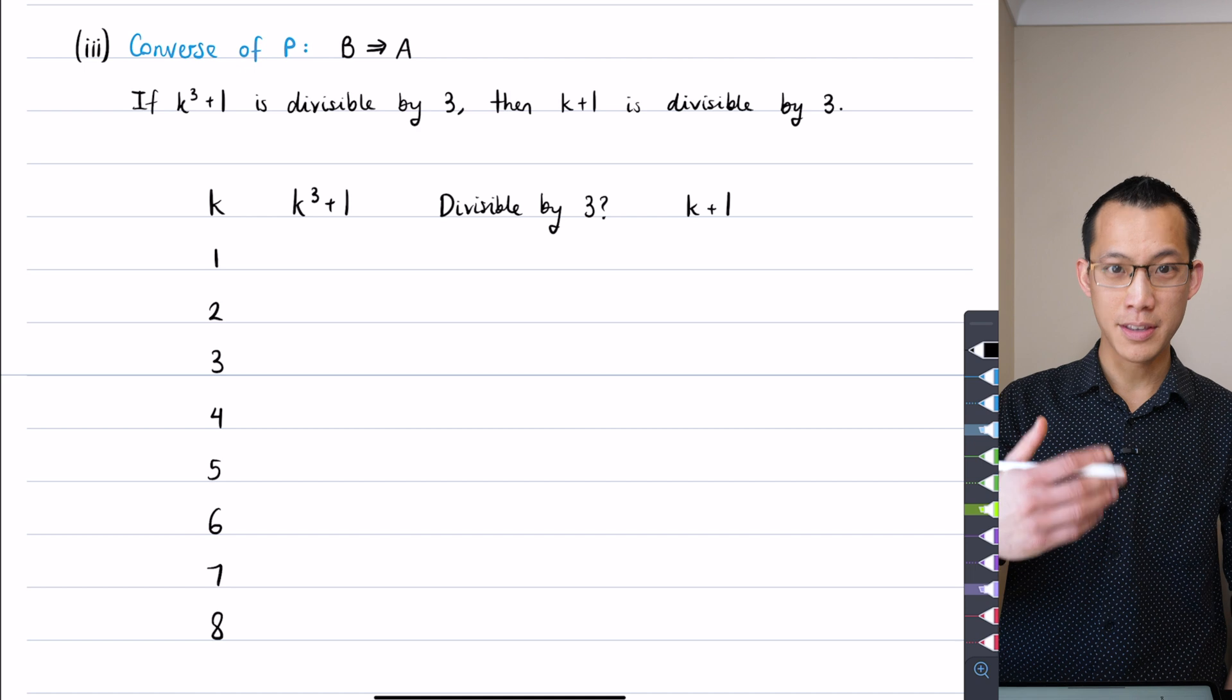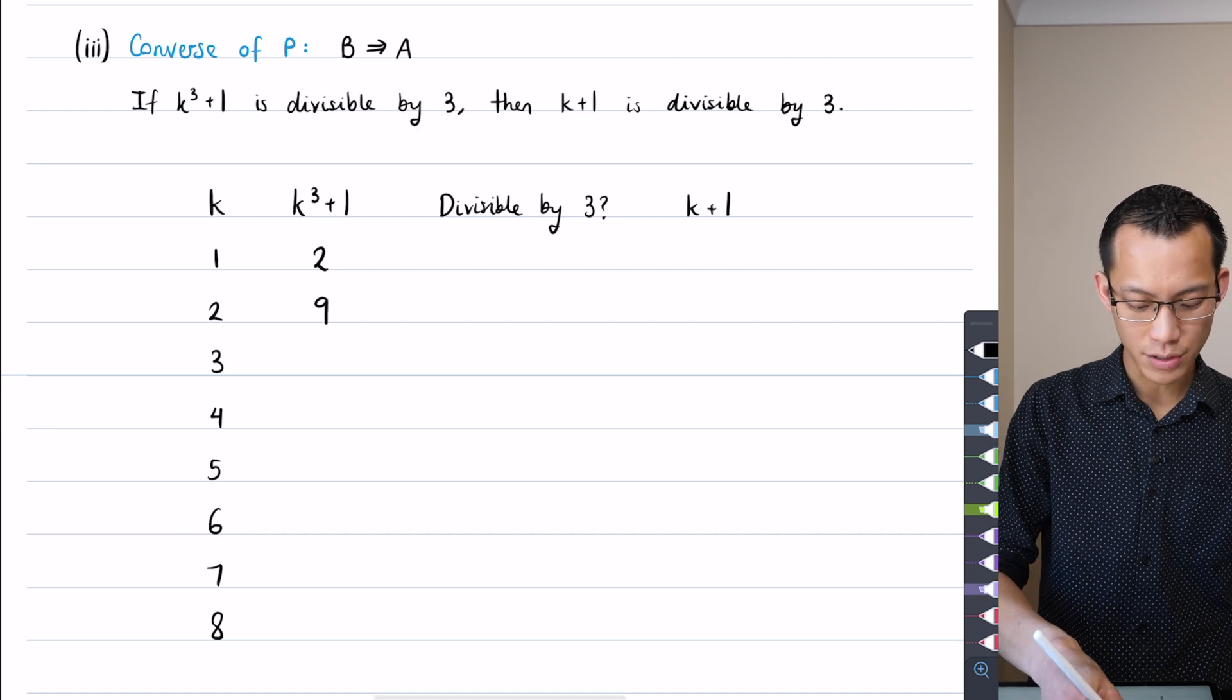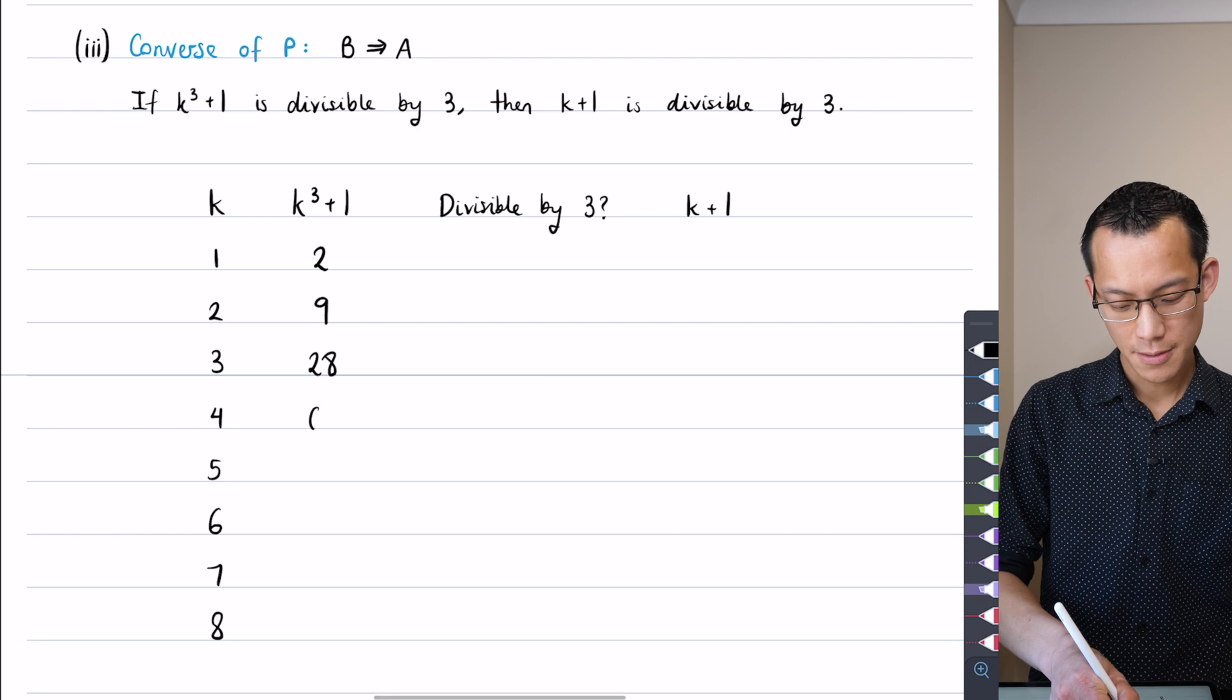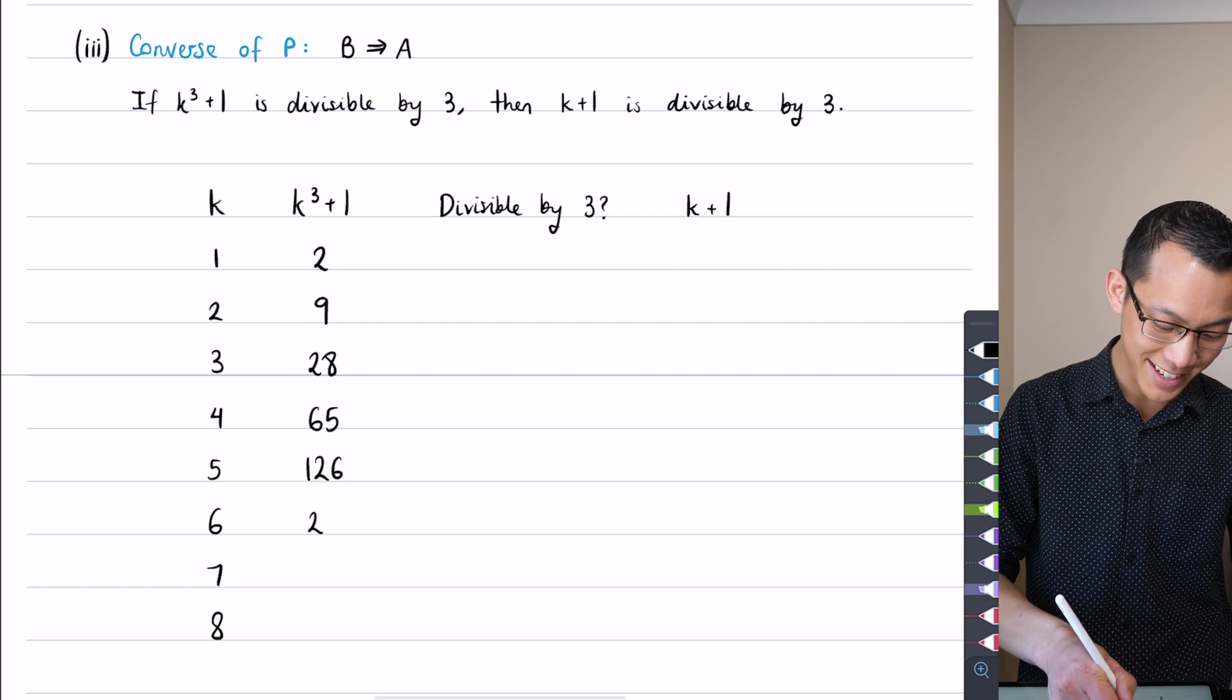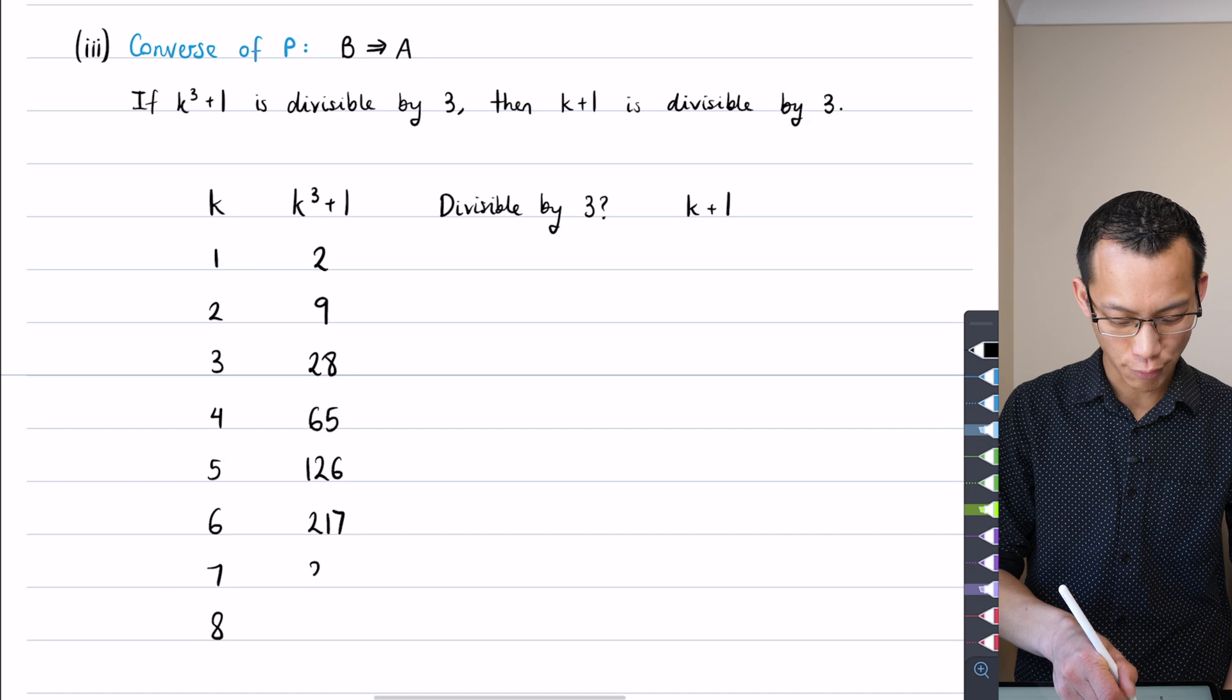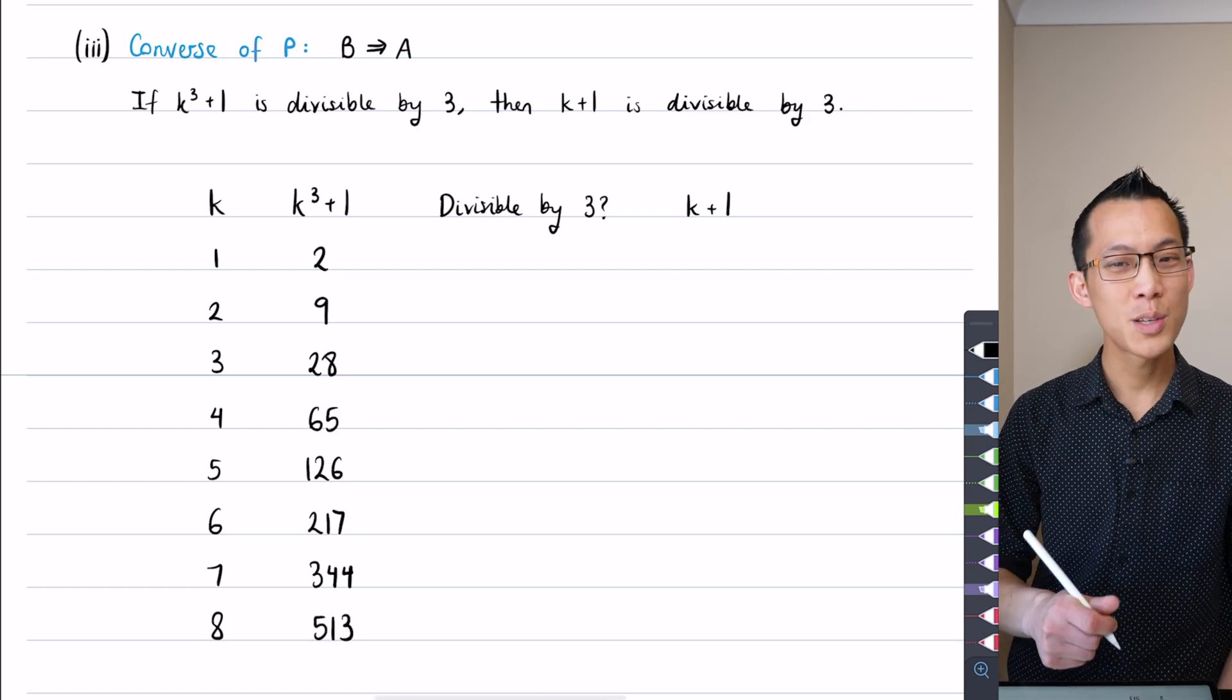I need to cube these numbers and then add one. So 1³ is 1, add 1 you get 2. 2³ is 8, so that goes to 9. 3³ is 27, so it gets 28. 64 turns into 65, 125 turns to 126, 216 turns into 217, 343 so I get 344, and 8³ is 512, so I add 1 and get 513.